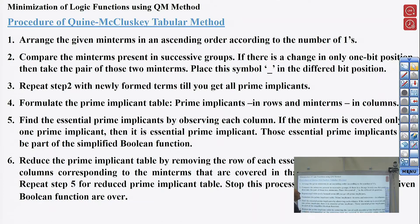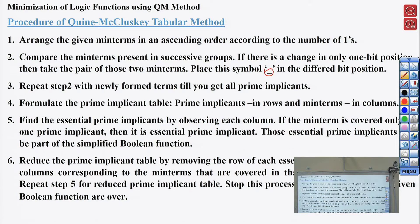According to the QM method, we arrange the given minterms in ascending order according to the number of ones. The first group has minterms with zero ones, the second group has minterms with one, then two ones, three ones, and so on. We compare minterms in adjacent groups; if there is a change in only one bit position, we take that pair and replace the differing bit position with a dash. We repeat this step with newly formed terms until we get all the prime implicants.